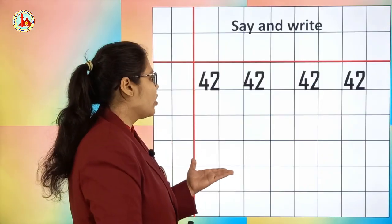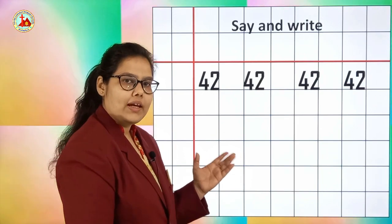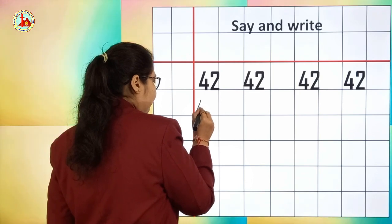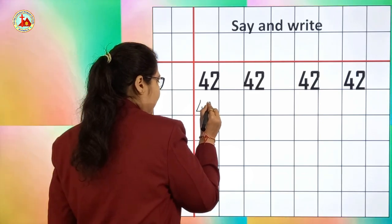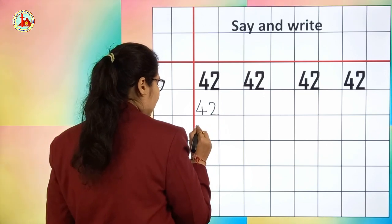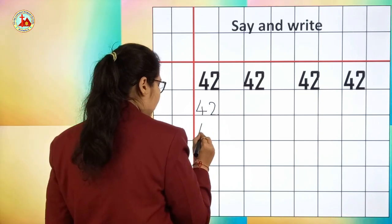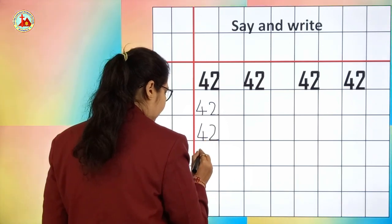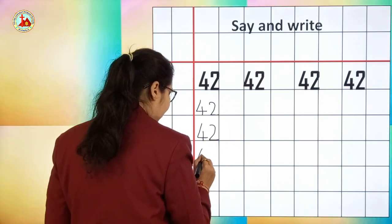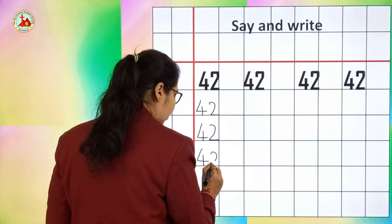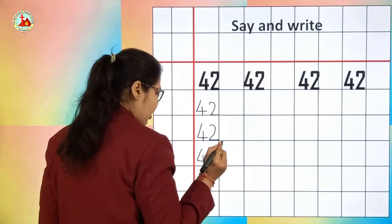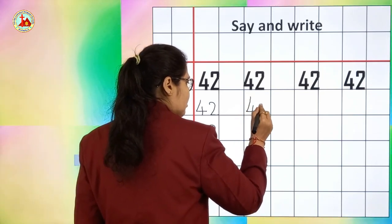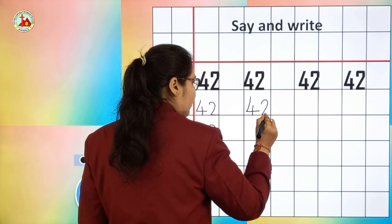Now we are going to write number 42 in a square line page. First we have to write number 4, then number 2. 4, 2, 42. Which number are we writing? Number 42. You have to say the numbers properly along with writing.